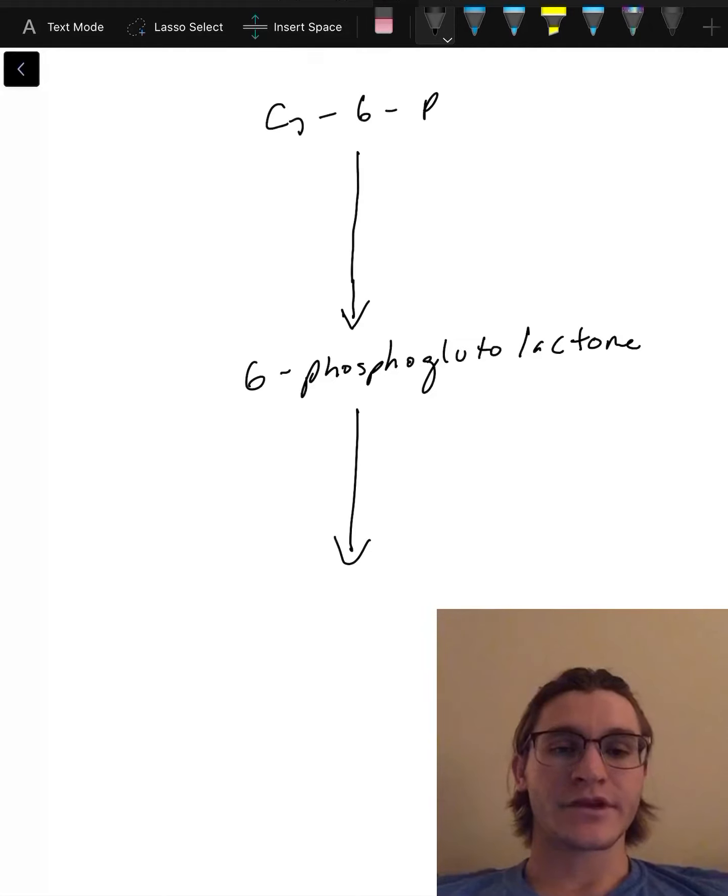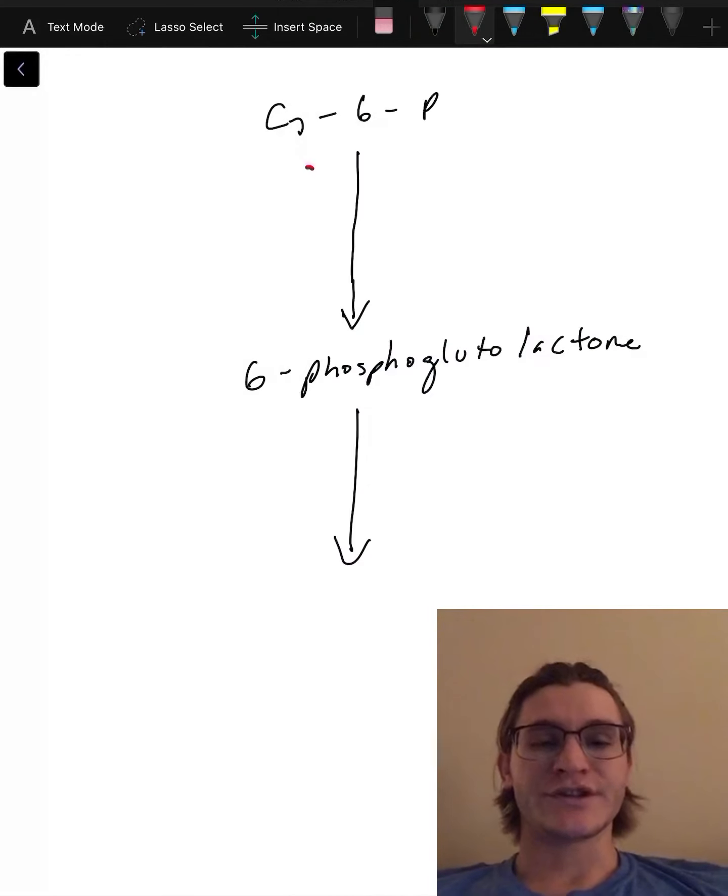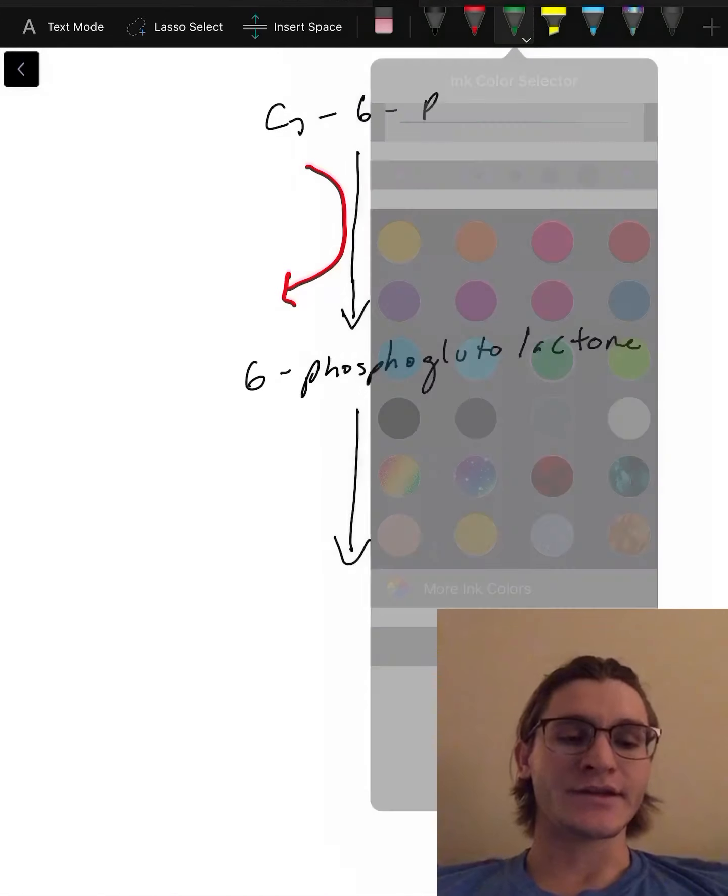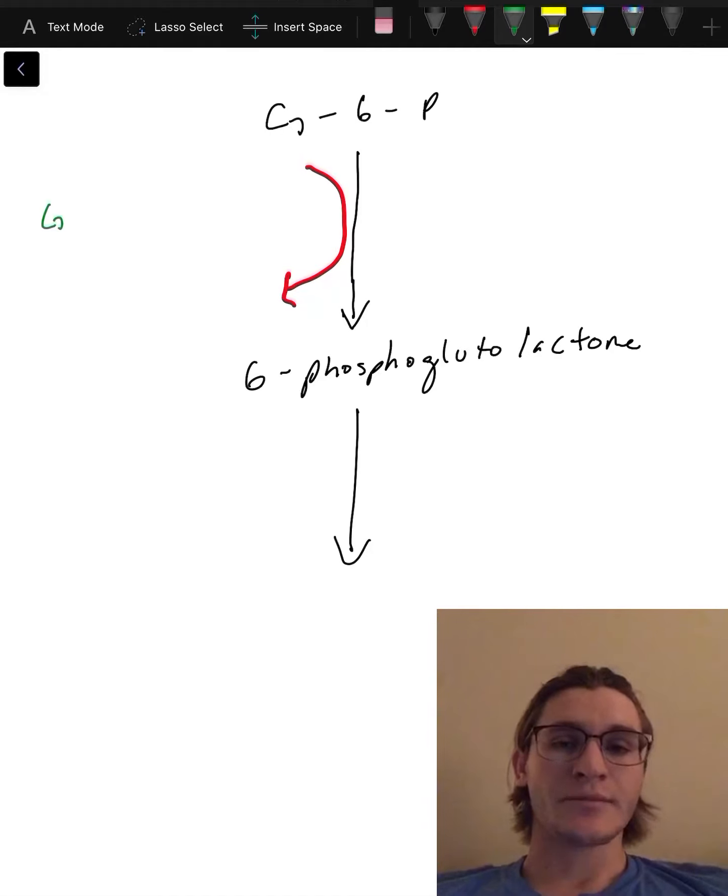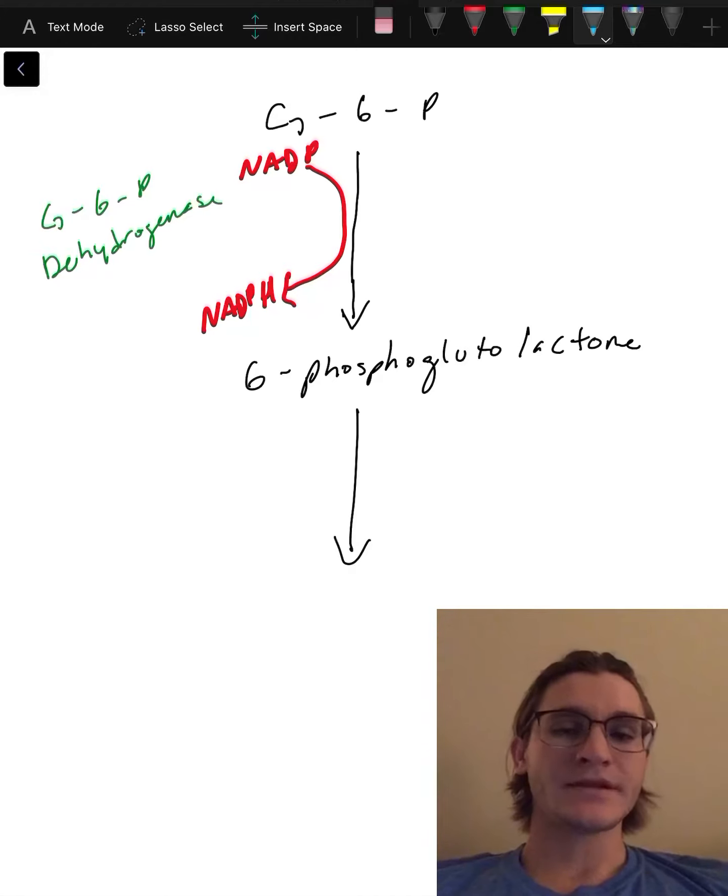Our enzyme that's gonna help us do this is glucose-6-phosphate dehydrogenase. What we know about dehydrogenases is that they're an indirect energy source. This is gonna be our indirect energy source, and I told you we're gonna get NADPH. So we have NADP+ to NADPH.